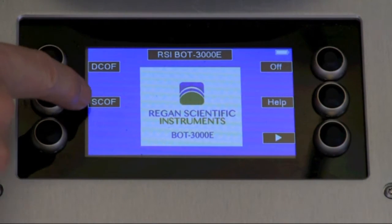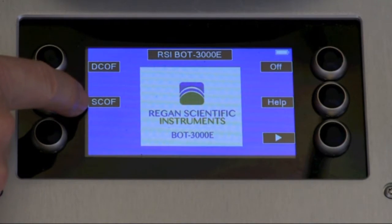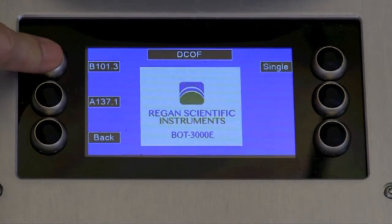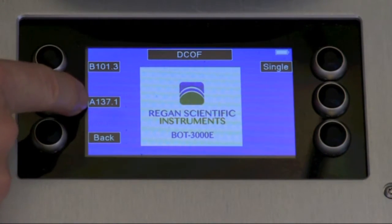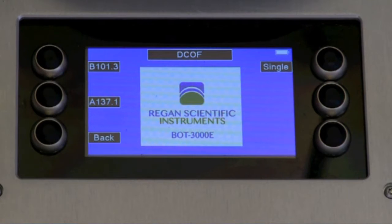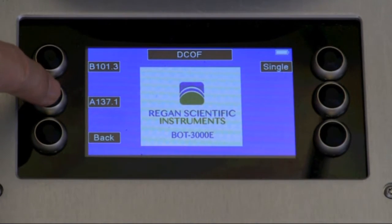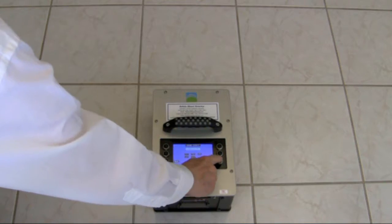Pressing any button turns on the display, and then we have a choice of either running a static or dynamic coefficient of friction test. Let's choose dynamic, and then let's run the ANSI A137.1 test method, which is the official test method for testing indoor flooring according to the latest 2012 International Building Code.